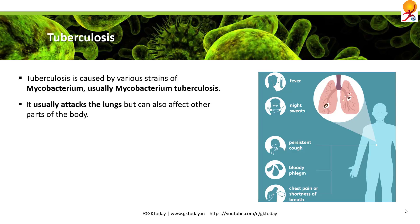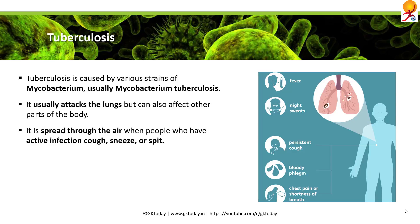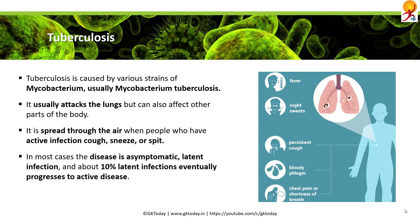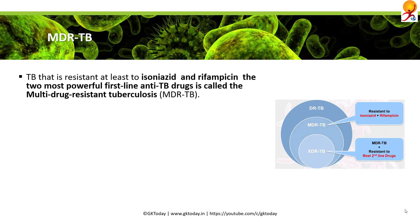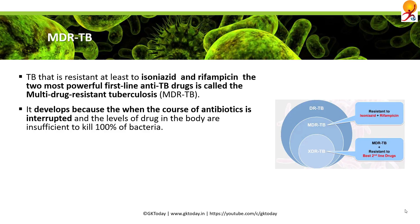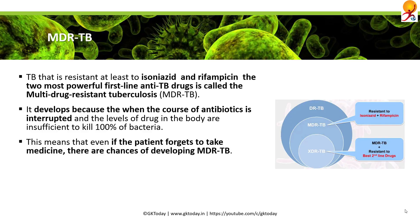Tuberculosis is spread through the air when infected people cough, sneeze, or spit. The disease has an asymptomatic latent infection phase, and about 10 percent of latent infections eventually progress to active disease. If untreated, it can kill 50 percent of its victims. MDR-TB, or multi-drug resistant tuberculosis, occurs when TB is resistant to at least isoniazid and rifampicin, the two most powerful first-line anti-TB drugs. It usually develops when the course of antibiotics is interrupted and there is not enough drug in the body to kill all bacteria present.